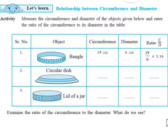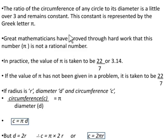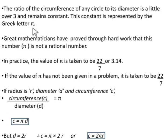All the ratios obtained here are slightly bigger than 3, or slightly little over 3. So what do we analyze from this? The ratio of the circumference of any circle to its diameter is a little over 3 and remains constant. This constant is represented by the Greek letter pi — that is, the ratio of circumference to the diameter is called pi.